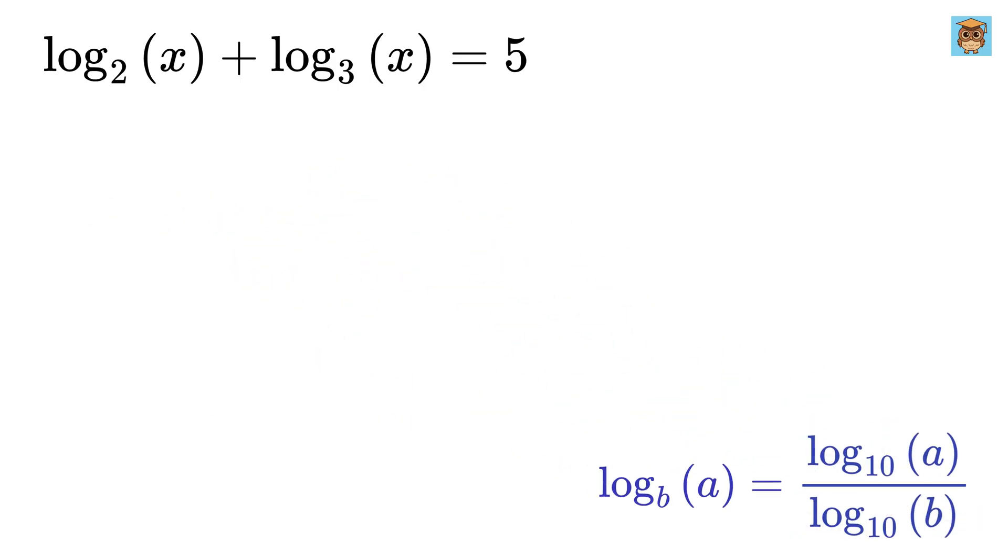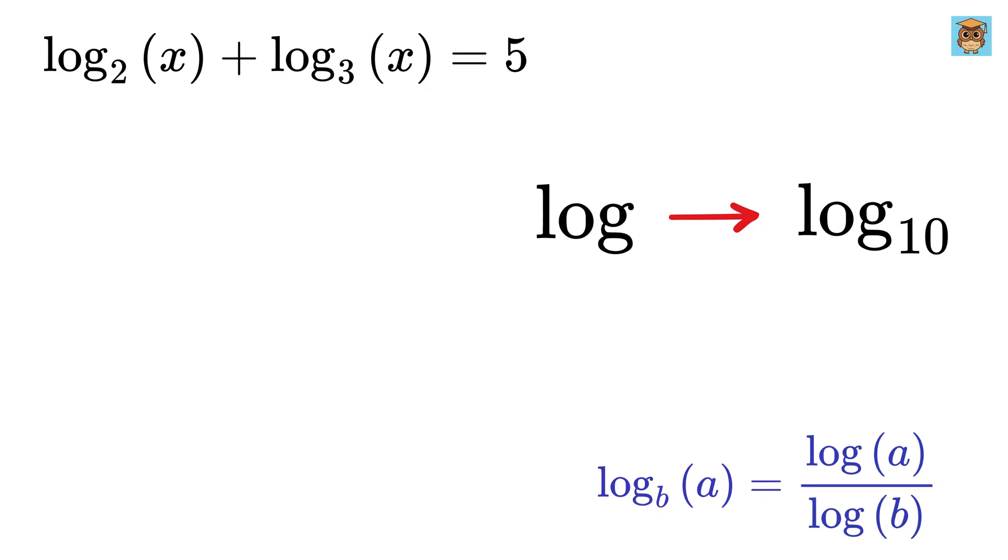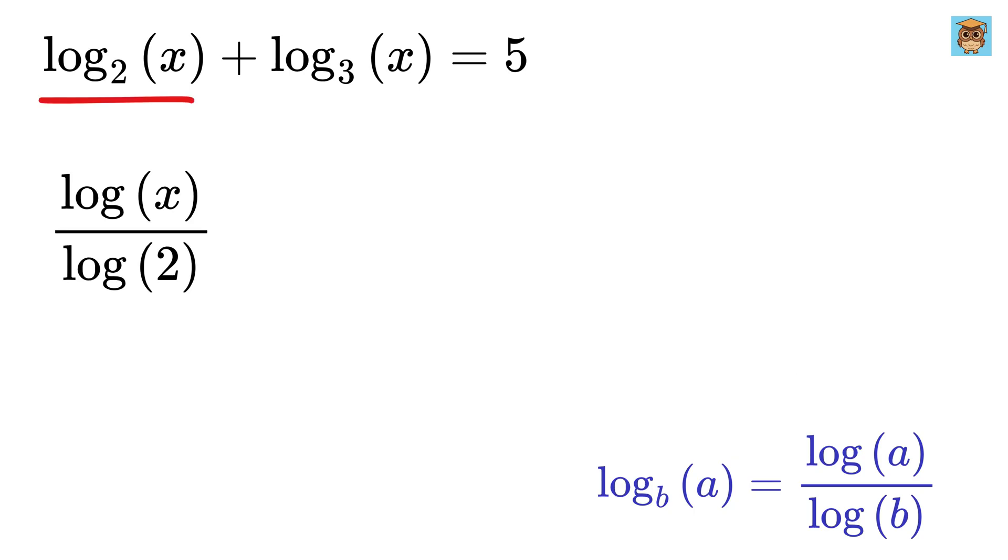Now from this point onward, we will simply refer to it as log instead of explicitly mentioning base 10. Now using this property of logarithms, we rewrite this term as log of x over log of 2 plus this term as log of x over log of 3 and that equals 5.